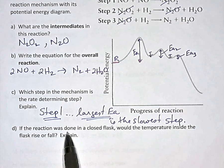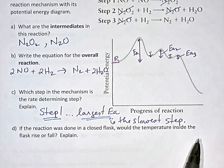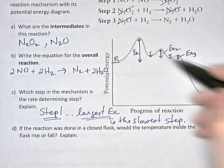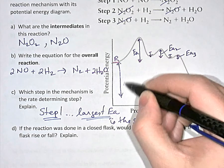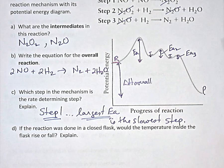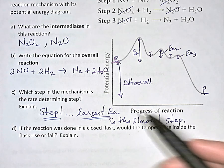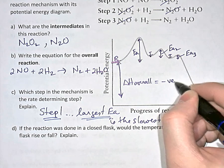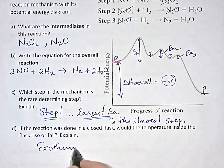The final question asks: if the reaction were in a closed flask, would the temperature inside the flask go up or go down? That's really asking whether this is an endothermic or exothermic reaction. Looking at the potential energy diagram, the overall delta H is the difference between the beginning reactants and the final products. You began with higher energy and finished with lower energy, so energy was released and the overall delta H is negative — it's an exothermic reaction.